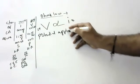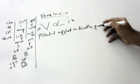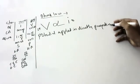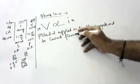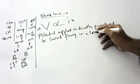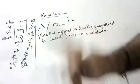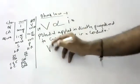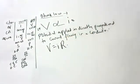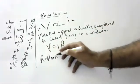Potential applied is directly proportional to current flowing in a conductor. Removing the proportionality sign, we introduce a constant R, where R is called resistance.